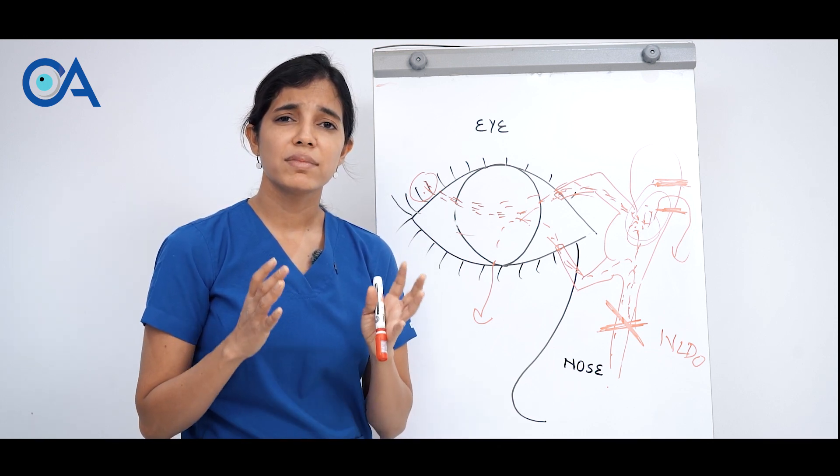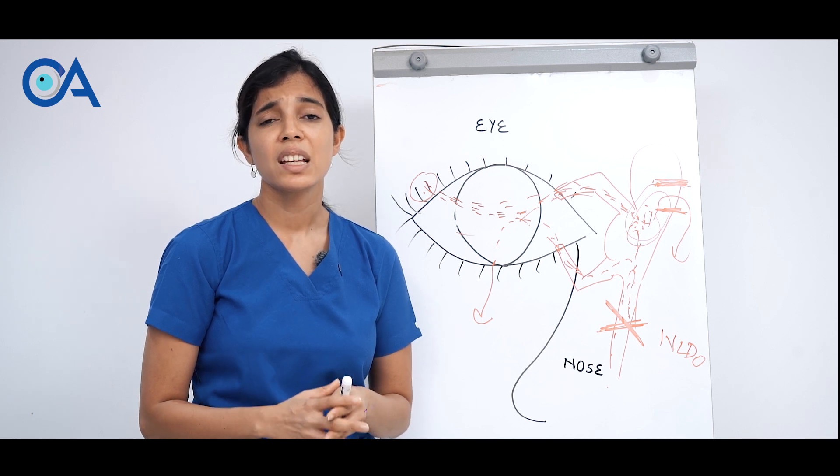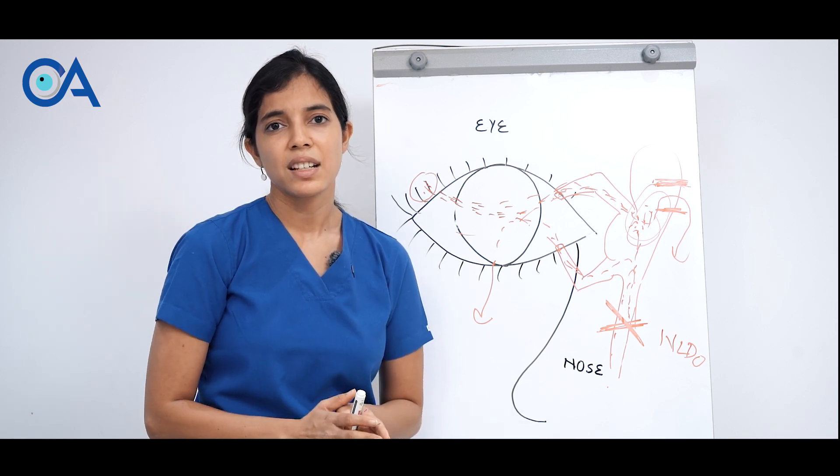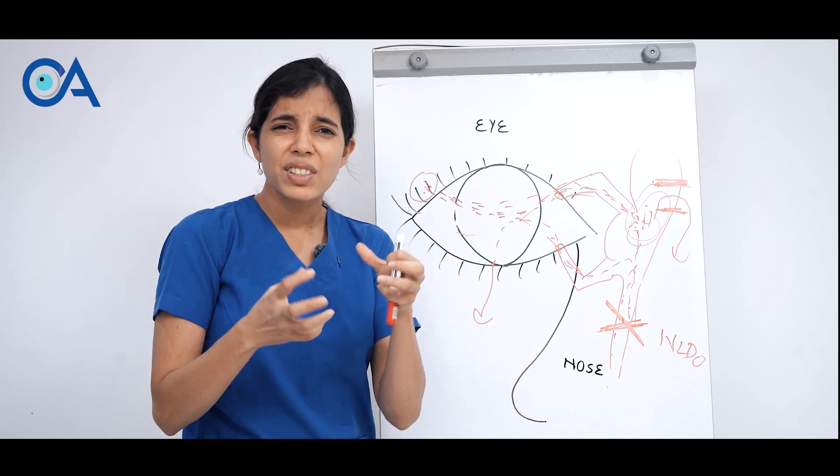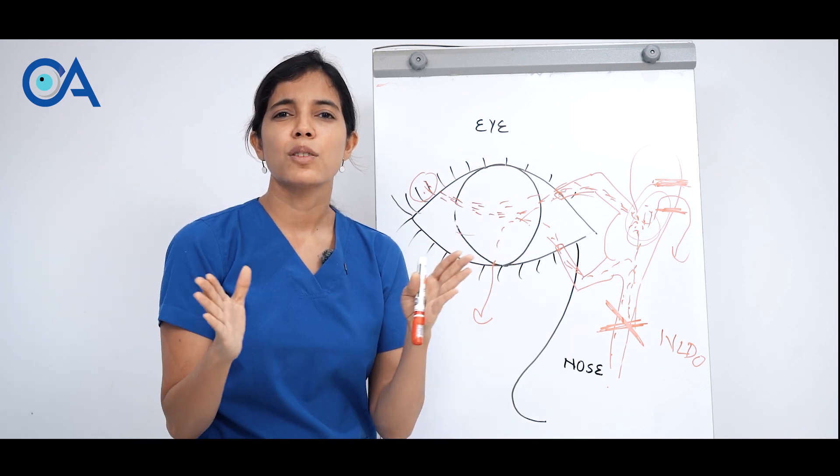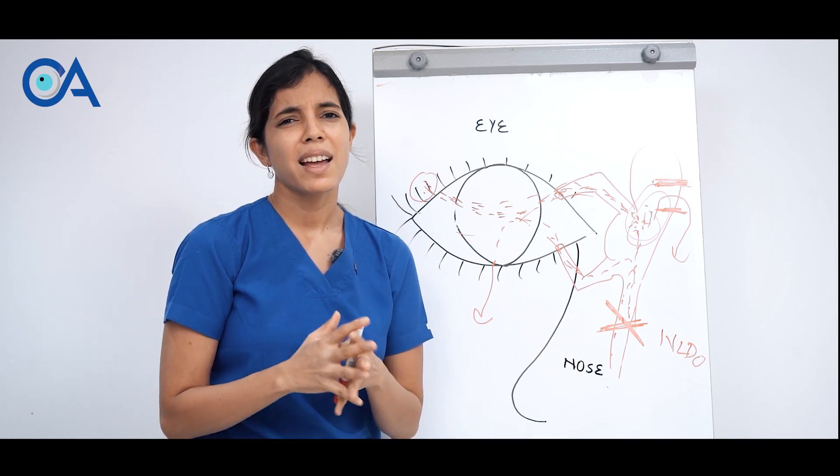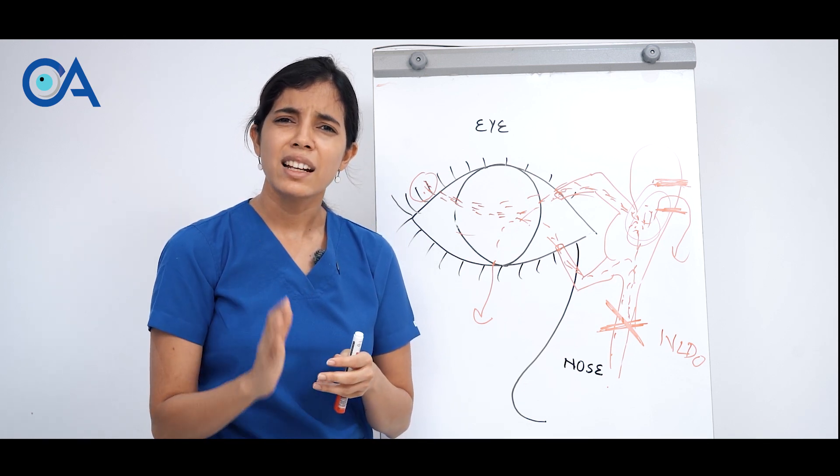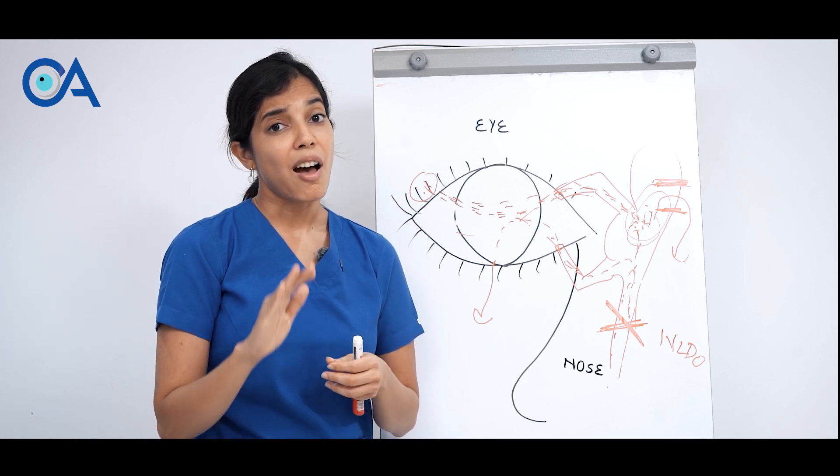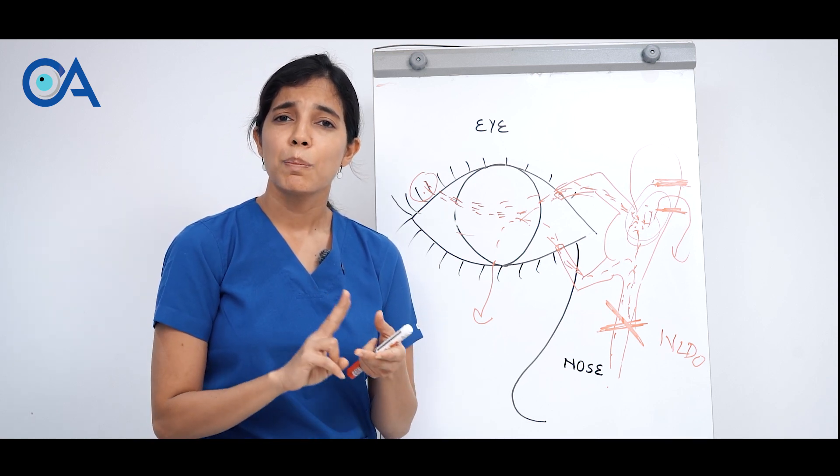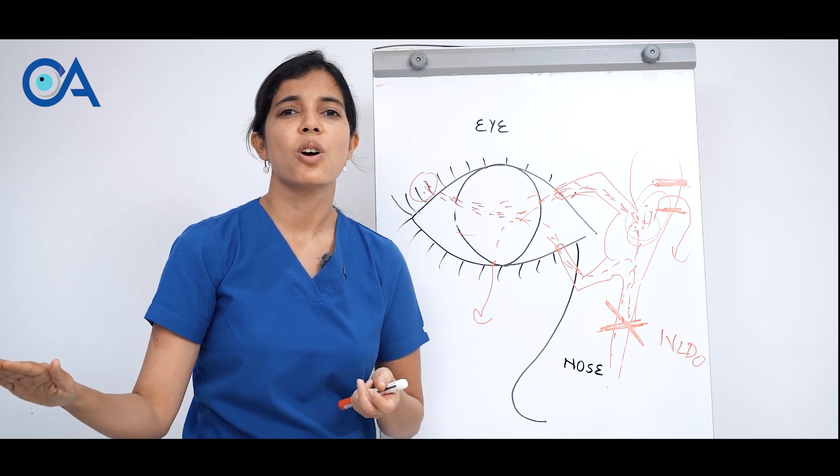The success rate of this surgery is 95%. In 5% of cases the new pathway that we made, the body's reaction can close that pathway also. But that happens less commonly and in 95% of cases we get very good success rates and after the surgery, watering, pus discharge everything resolves completely.